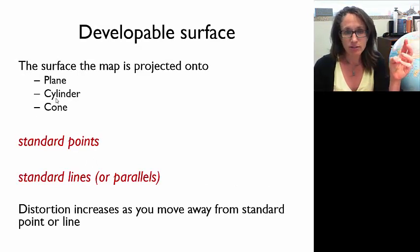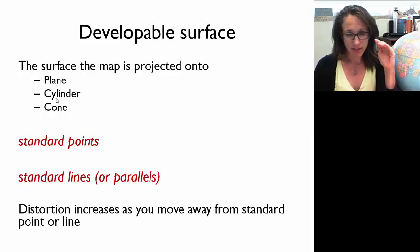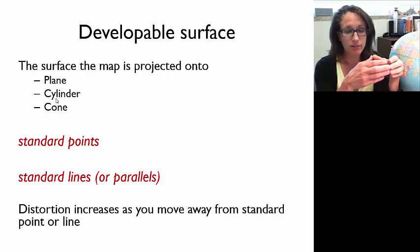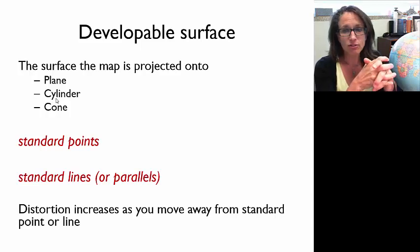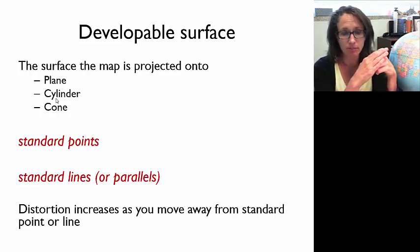We have three options for the developable surface. We can project the Earth's surface onto a plane, we can project it onto a cylinder, or we can project it onto a cone. The distortion of our mapped area is minimized at the point where the developable surface makes contact with the globe.